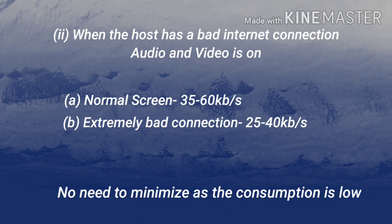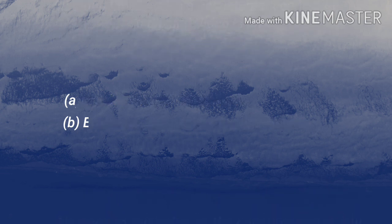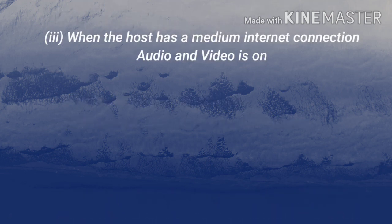While viewing on the normal screen with a bad host connection, the net speed is around 35 to 60 kbps, so there is no need to minimize the video as the net consumption is already low. In the rare case when your host has an extremely bad connection, speeds will fall down to 25 to 40 kbps and even lower. You can tell the host has an extremely bad connection when the video is stuck at one point for a long time or when they start speaking in a robotic voice.